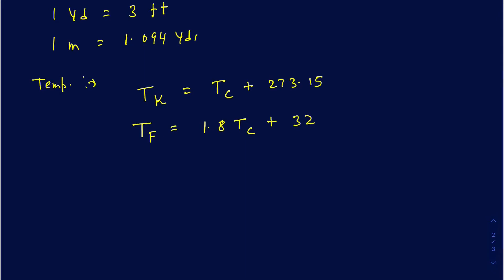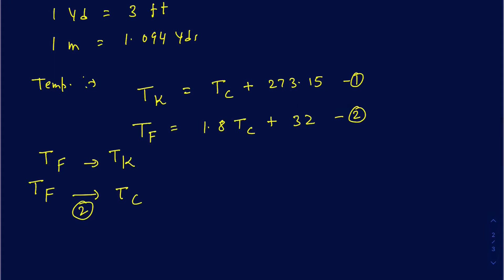To convert Fahrenheit to Celsius, use the same second formula and manipulate it. If you're trying to convert Fahrenheit to Kelvin, rather than memorizing a separate formula, first convert Fahrenheit to Celsius using the second equation, and then use the first equation to convert that Celsius temperature into Kelvin. That's how you use those two formulas to go from one temperature scale to another.